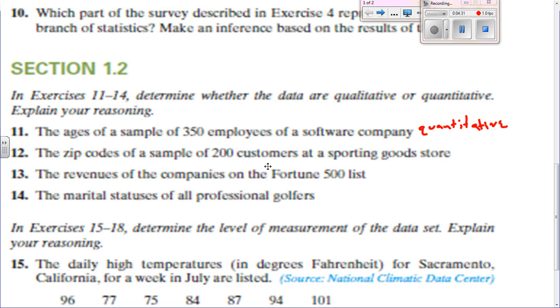Revenues of the companies — that would be quantitative. And marital status — whether they're single, married, or divorced — that would be qualitative.